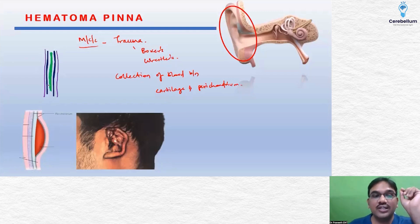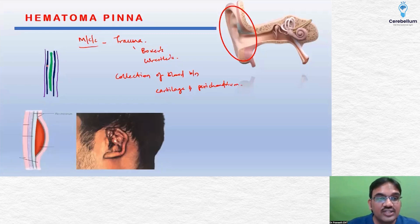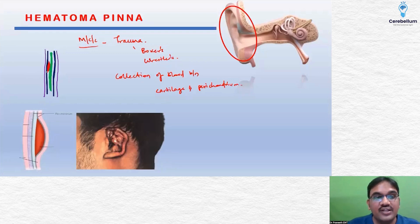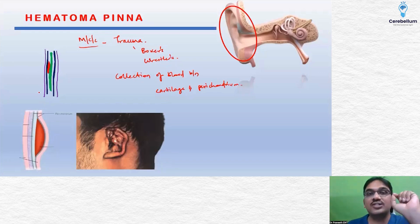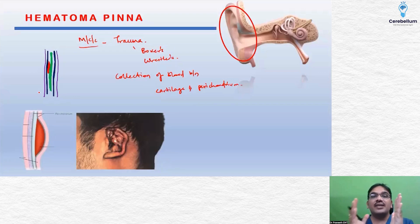When you take a cross section of the pinna, these are the arrangements of the structures. Now, whenever there is sudden trauma, the microvasculature present in the perichondrium gets ruptured, and all the blood gets collected in between the cartilage and the perichondrium.